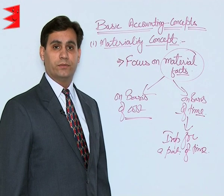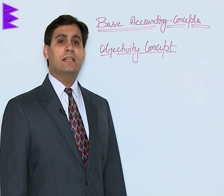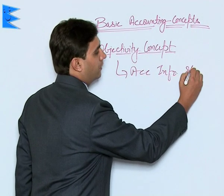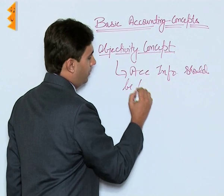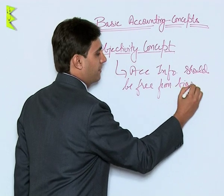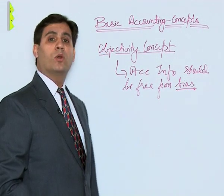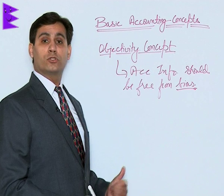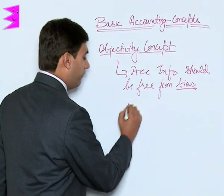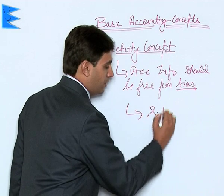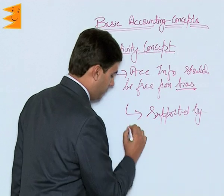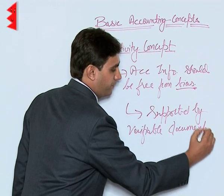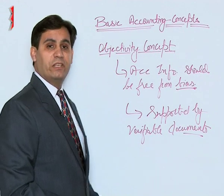Coming to the objectivity concept — this concept tells us that accounting information should be free from bias. This is linked to the qualitative aspect of accounting information: any information disclosed through the books of accounts should be supported by verifiable documents.